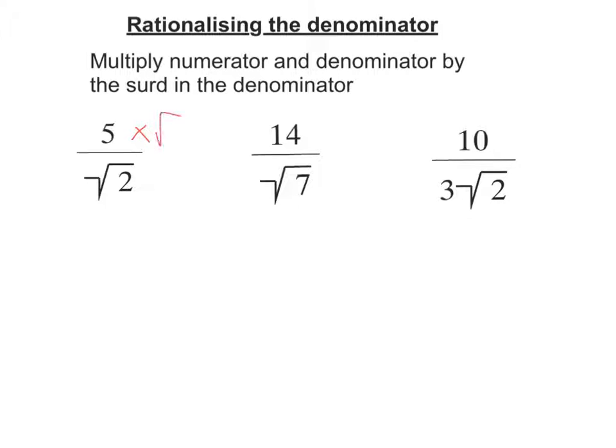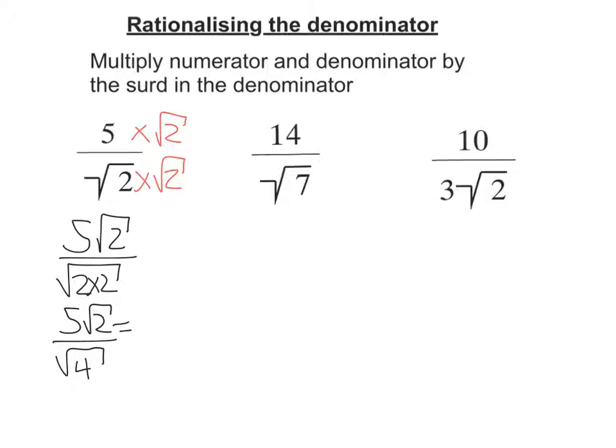So the first one, I multiply top and bottom by root 2. On the top I'm going to get 5 root 2, and on the bottom I'm going to get root 2 times 2, so 5 root 2 over root 4. Well, square root of 4 is 2. So there we go, rationalized the denominator.